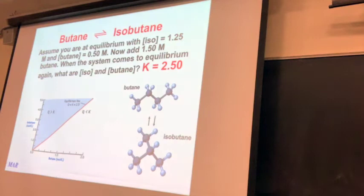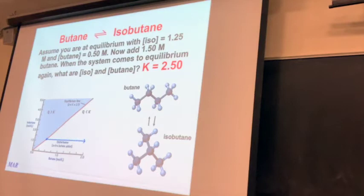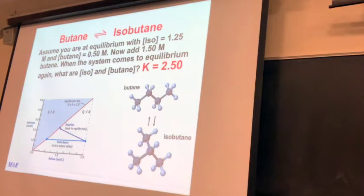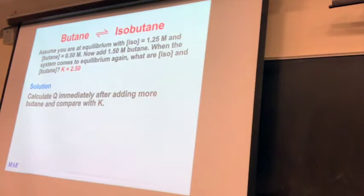We can use this information to calculate the new equilibrium concentrations. Butane and isobutane can interconvert to reach a dynamic equilibrium. The graph shows the equilibrium line. If we add butane to the system, the equilibrium is disturbed and the butane reacts to form isobutane until equilibrium is re-established. Instead of being on the slope of 2.5, we're now way off to the right, and the system will adjust back to the equilibrium position. Our goal is to determine what these new numbers are, which you can read from the graph or calculate using Q.